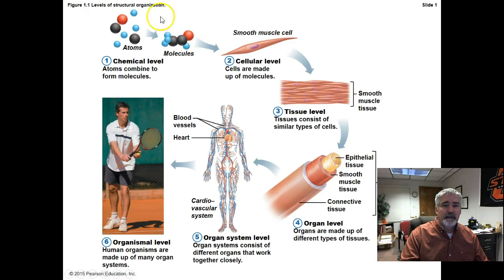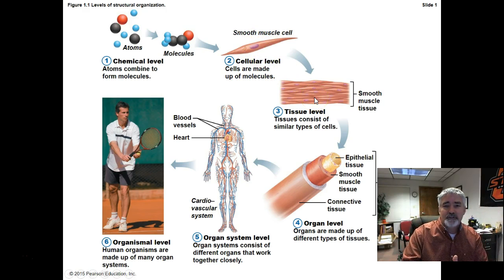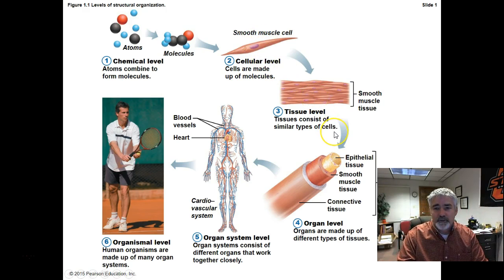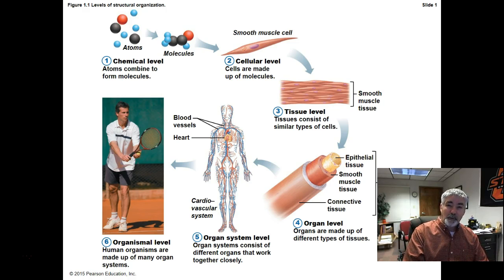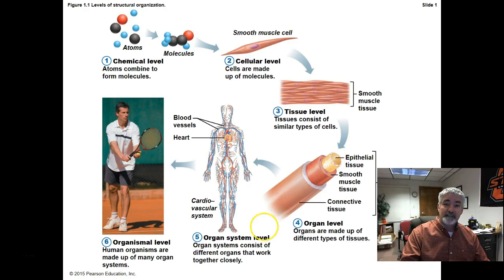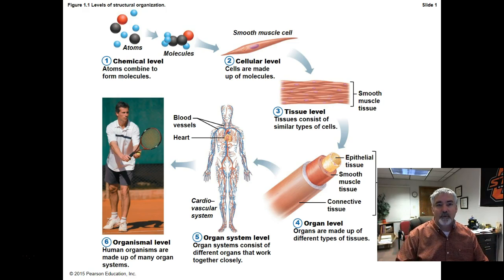We can see those levels played out on this slide: the chemical level with atoms and molecules, then those make up cells. Put a bunch of cells together and they make up tissues. Put different types of tissues together and they create an organ. Take organs that serve the same purpose — like the heart and blood vessels — and that creates an organ system. Tie several organ systems together and you have an organism.